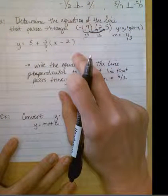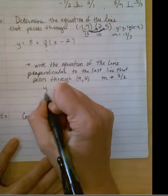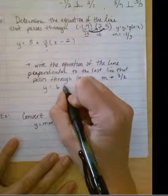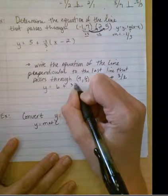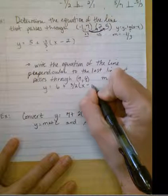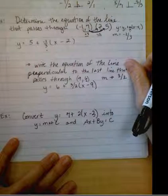And then I can just plug it into our point-slope formula. y equals y sub 1, 6, plus m times the quantity x minus x sub 1, 9. All done.